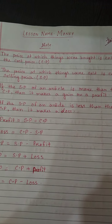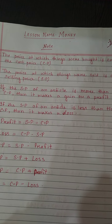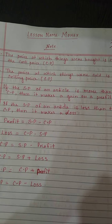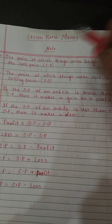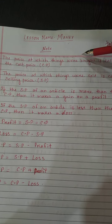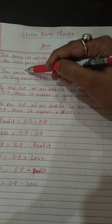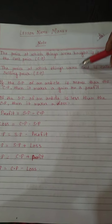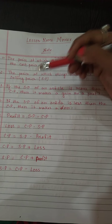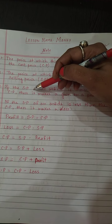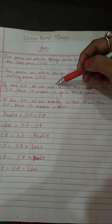After buying the items, you sell to your customer. Whatever items you sell to your customer, that is your selling price — that is SP. So the price at which things were sold is called selling price.